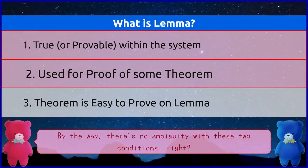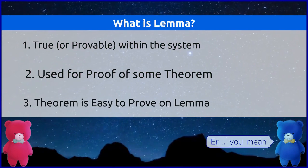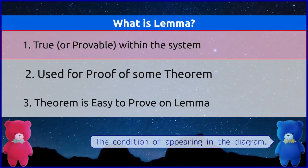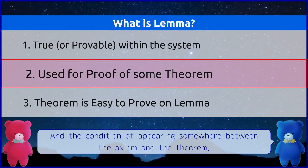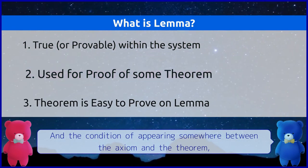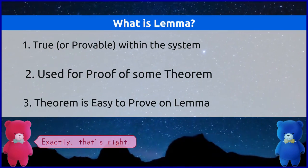By the way, there's no ambiguity with these two conditions, right? Ah, you mean the condition of appearing in the diagram and the condition of appearing somewhere between the axiom and the theorem. So there's no difficult or unclear boundary. Exactly, that's right.